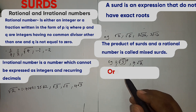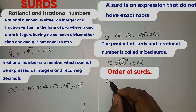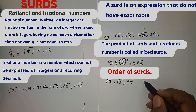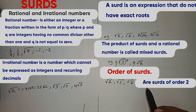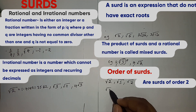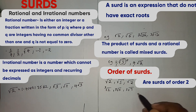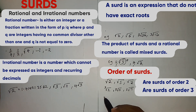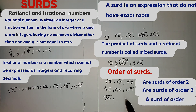Now let us move to the order of surds. For example, square root of 2, square root of 5, and square root of 7 — these kinds of roots are of order 2. What about cube root of 2, cube root of 5, and cube root of 7? These ones are surds of order 3. In general, if we have the nth root of a number a, we say this is a surd of order n.